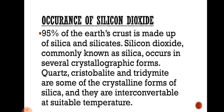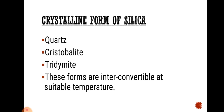95% of the earth's crust is made up of silica and silicate, which is sand. Silicon dioxide, commonly known as silica, occurs in several crystalline forms. Some of the crystalline forms of silica are quartz, cristobalite, and tridymite. These forms are interconvertible — that is, they can be converted into each other when heated at a suitable temperature.